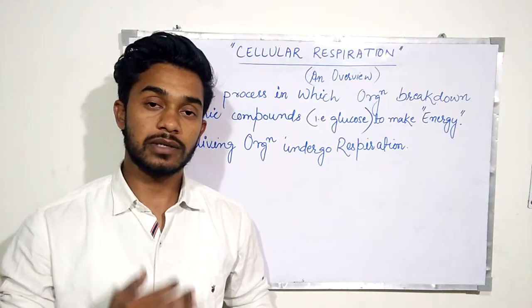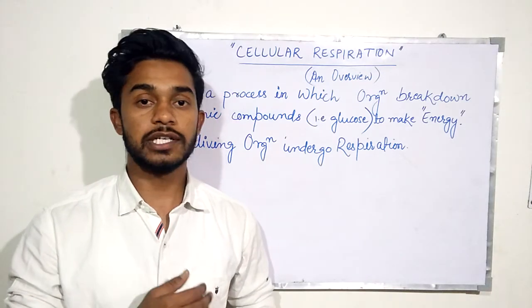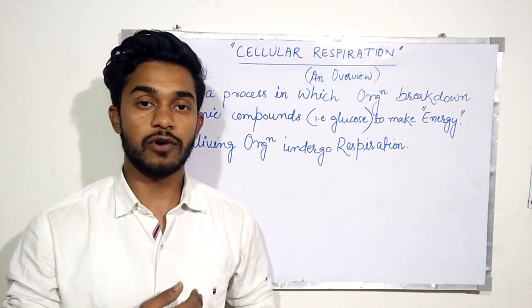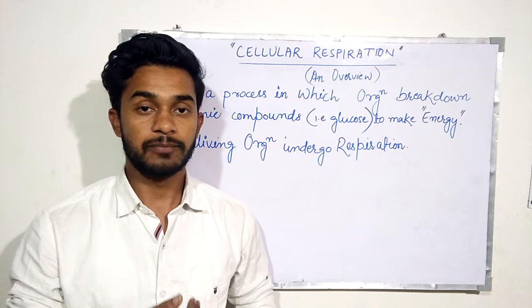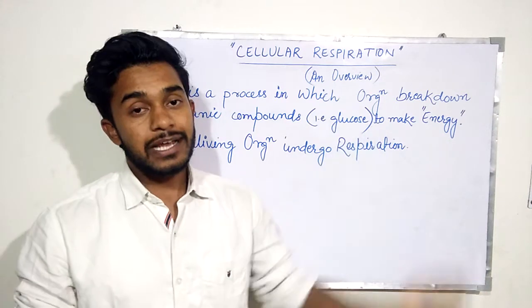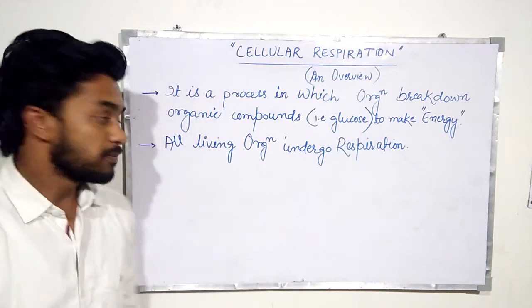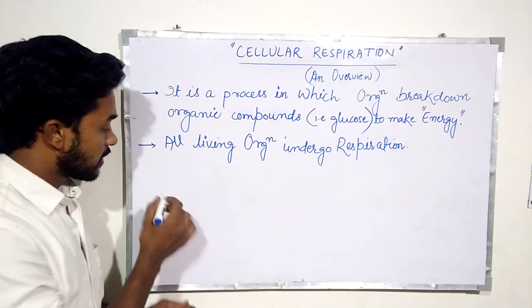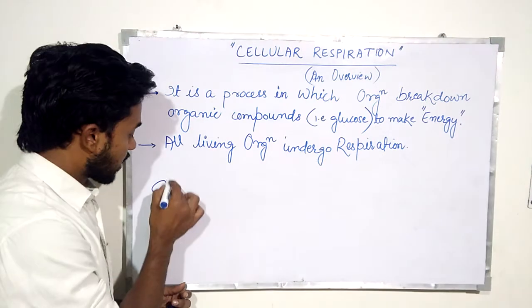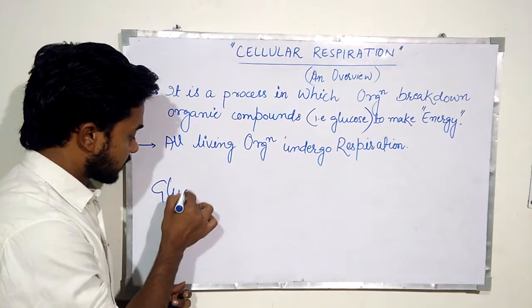All living organisms — bacteria, algae, fungi, plants, and animals — undergo respiration. Cellular respiration is a process through which living organisms produce energy in the form of ATP. Cellular respiration begins with glycolysis.